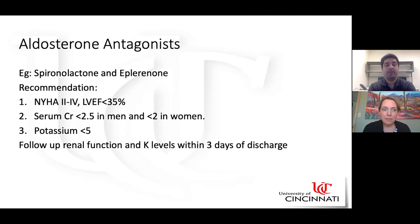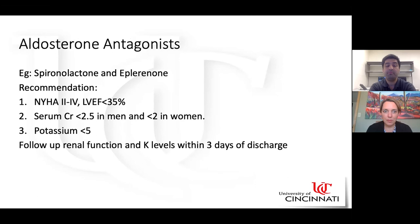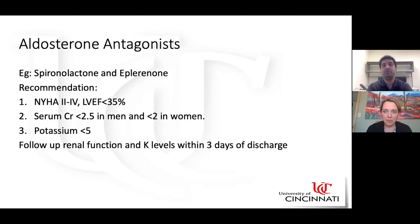Aldosterone antagonists — spironolactone and eplerenone — are used in patients with NYHA class two to four and ejection fraction less than 35%. Contraindications include serum creatinine greater than 2.5 in men or greater than 2.0 in women, or potassium of 5 or more. Patients should already be receiving an ARNI, ACE inhibitor, or ARB and a beta blocker. It is not necessary to have reached target doses of other medications prior to adding aldosterone antagonists.